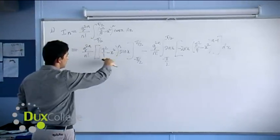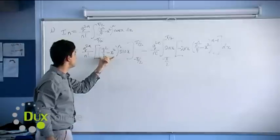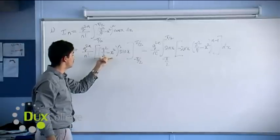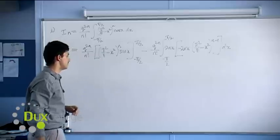Obviously this thing here is going to equal zero. The zeros of this function here are x equal pi on 2 and x equal minus pi on 2, and when you insert pi on 2 and minus pi on 2 into this function, obviously you're going to end up with a zero.